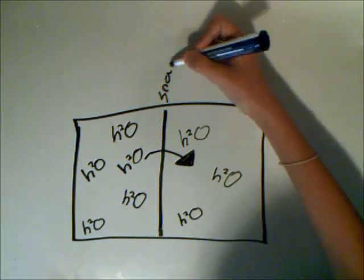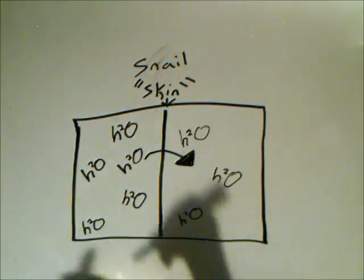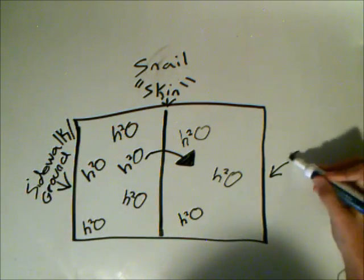In the case of a snail, the middle is the snail skin, the permeable membrane. One side is the sidewalk, which the snail drinks the water off, or the ground. The other side is the snail.